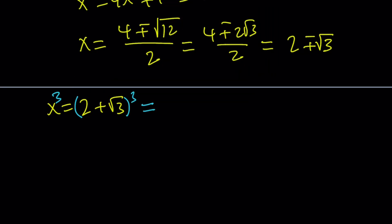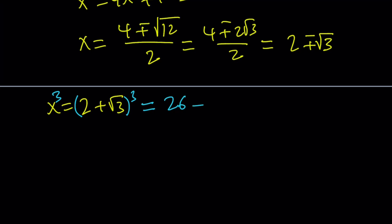So I'm going to cube this. 2 plus root 3 when cubed, if you cube a plus b, you get an expression like a cubed plus b cubed plus 3ab times a plus b. So we can basically write this as 26 plus 15 root 3 after simplifications.